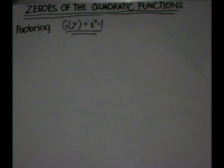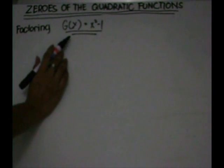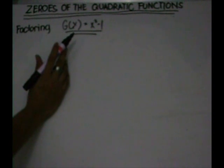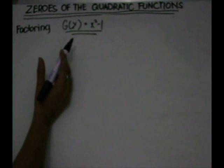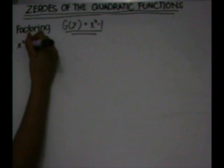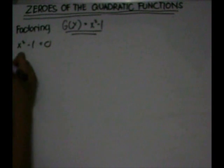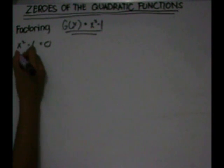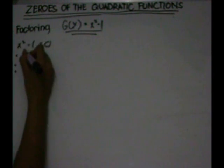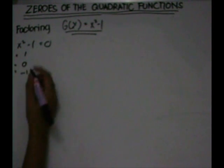Zeroes of the quadratic functions. There are three ways on how to find the zeros of quadratic functions. The first one is by factoring. We'll take this as an example: G of x is equal to x squared minus one. First, we'll equate this to zero. And we'll get a, b, and c: a is equal to one, b is equal to zero, and c is equal to negative one.